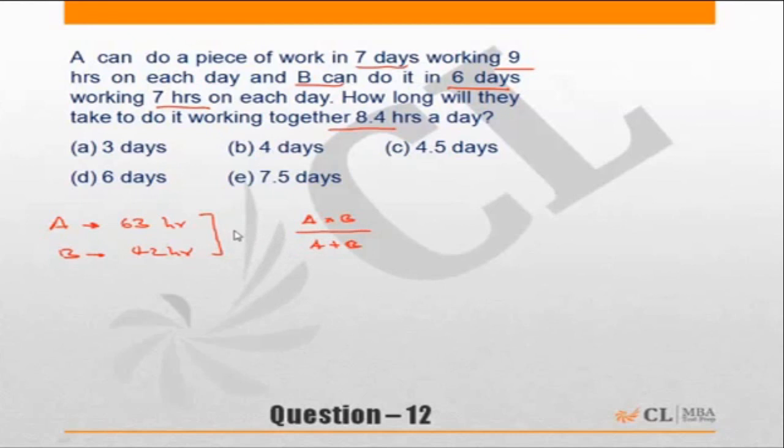If A does the work in A hours and B does the work in B hours, the time taken by A plus B working together will be A into B upon A plus B, which is nothing but 63 into 42 upon 63 plus 42.